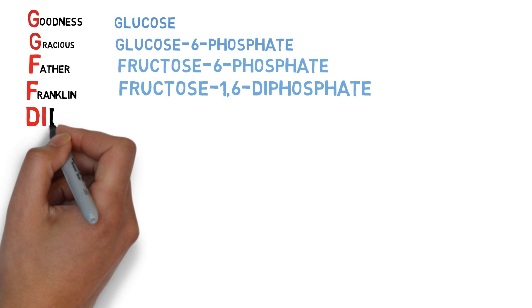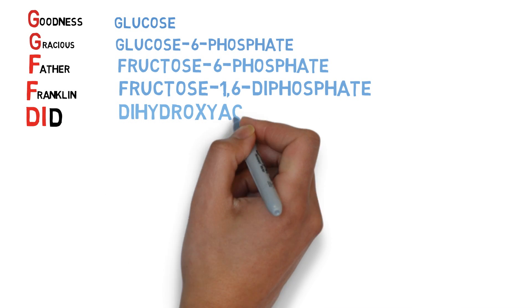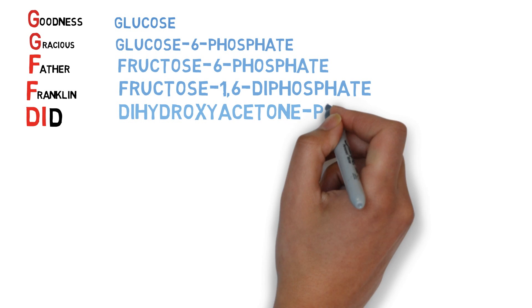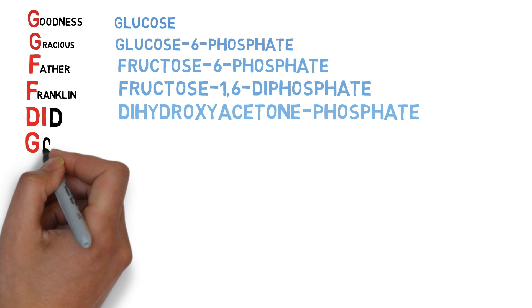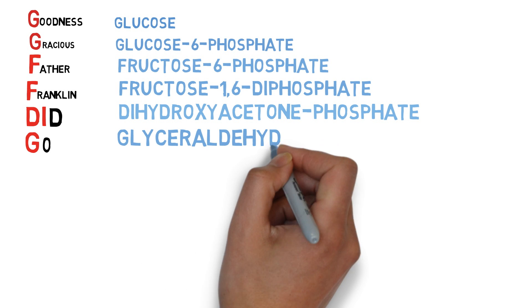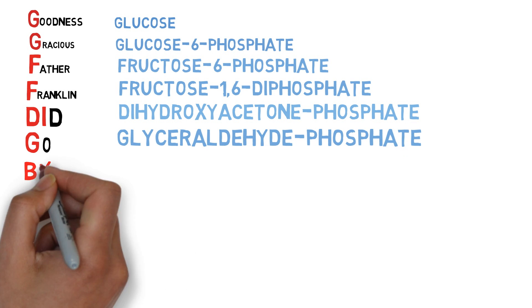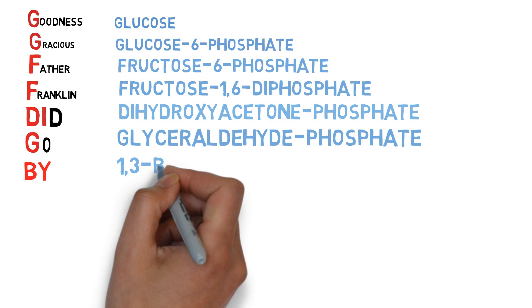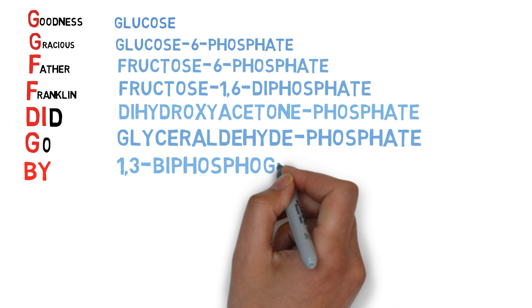D of did is for dihydroxyacetone phosphate. G of go is for aldehyde phosphate. P of by is for biphosphoglycerate.